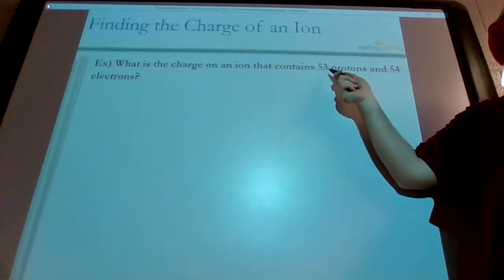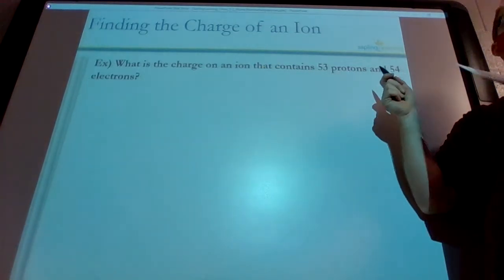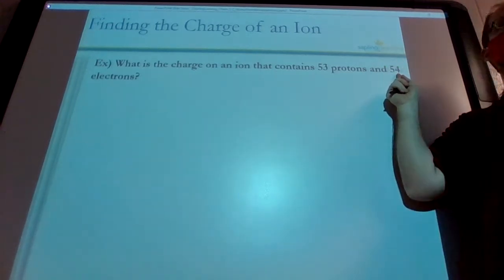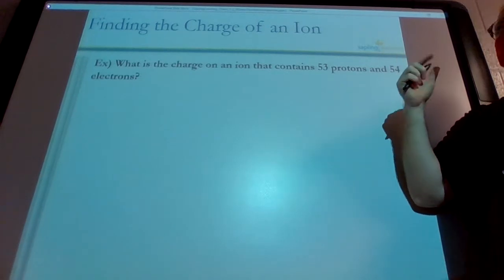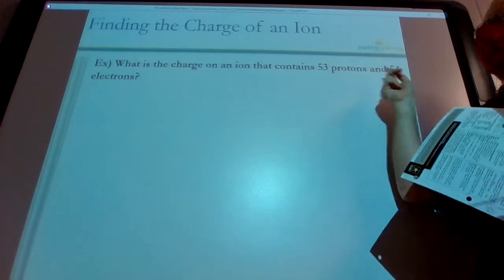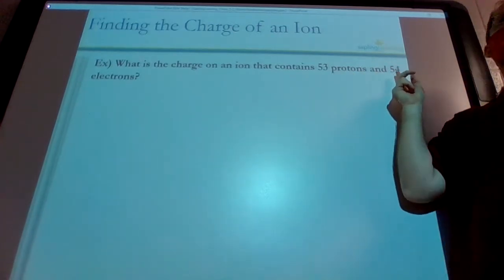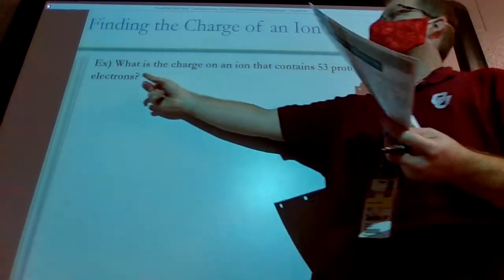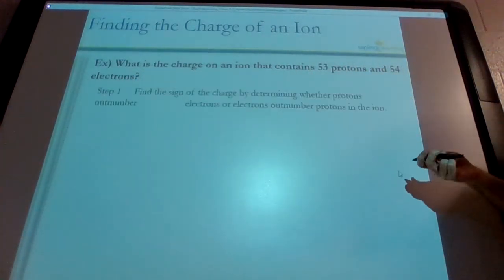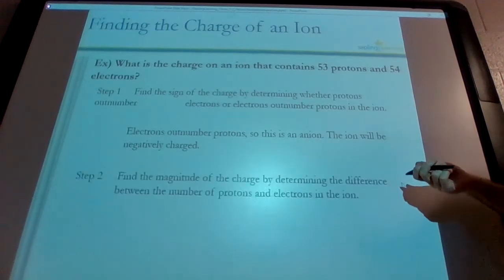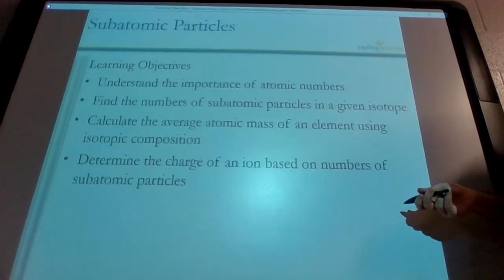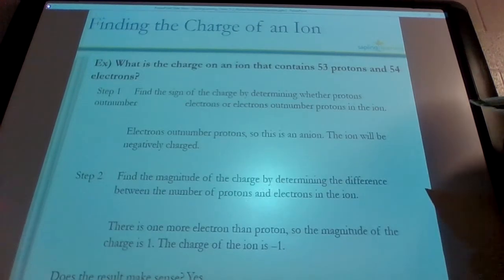What is the charge of an ion that contains 53 protons and 54 electrons? What's the charge? Negative one. You have one extra electron. The electrons are negative. It's going to be negative one. It doesn't really matter how many you have total. It just matters which one you have more of and how many more you have. So I have more electrons, which are negative. I have one more. So I'm going to have a negative one charge for this. Let's see if they have another example. They go through the steps. The steps are pretty simple. And that's it.